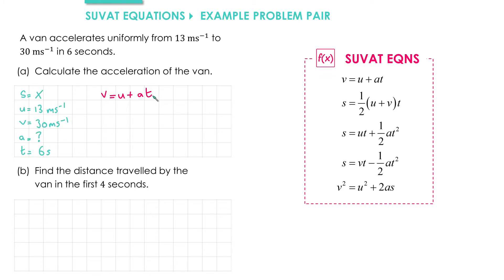In the exam, there are no marks for writing down the formula without substituting in values, but for clarity I'll write it: V equals U plus AT. What you do get marks for is writing down the formula with the numbers substituted in. So V is 30, U is 13, and T is 6, giving us 30 equals 13 plus 6A. It's good practice to substitute the numbers before you rearrange, as it's easier to get marks if you make a mistake.